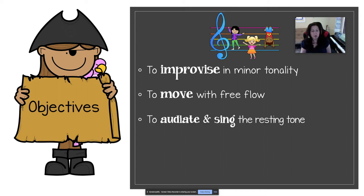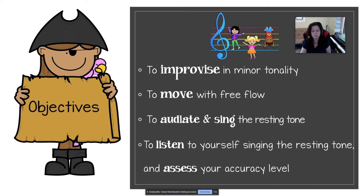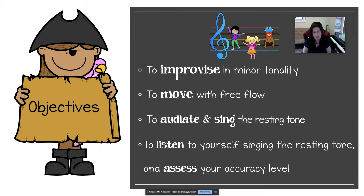Our objective is to audiate and sing the resting tone. Audiating is like thinking — in music, you hear and understand things, and that's called audiation. Finally, you're going to listen to yourself sing the resting tone after you practice for a bit, and you're going to assess your own accuracy level.